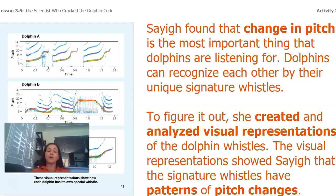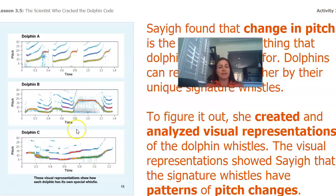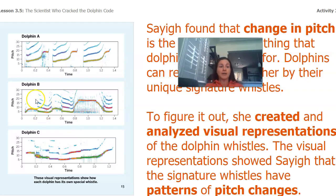And to figure that out, she created and analyzed visual representations like these of the dolphin whistles. The visual representation showed Sayig that the signature whistles have patterns of pitch changes. We can see pitch over here and we can see over time what changes happen in the pitch.